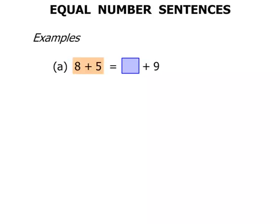Now you can see those numbers there on the left, 8 plus 5, we know that equals 13. So we've got one side equals 13, we've got to make sure the other side is equal to 13 as well. So we've got to ask ourselves, something plus 9 makes 13. Well, that something is 4.